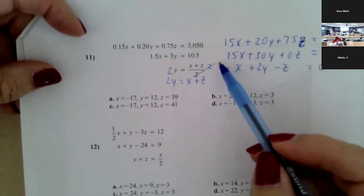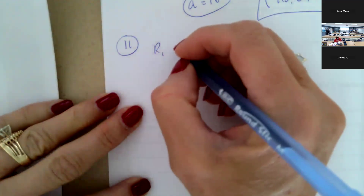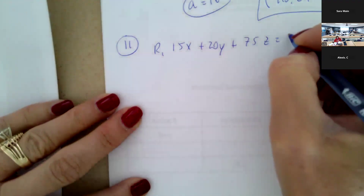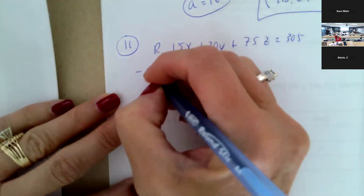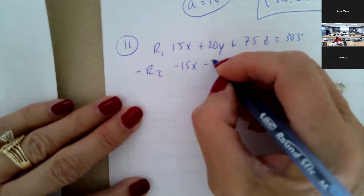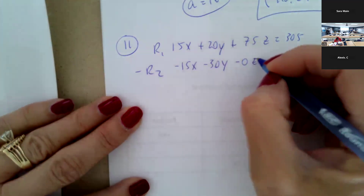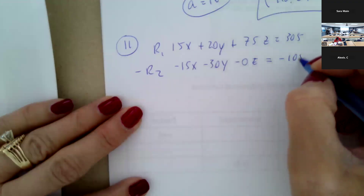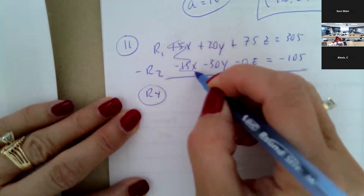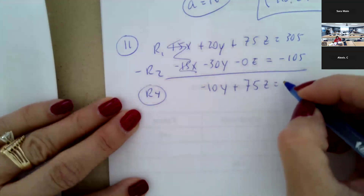The real work begins. I'm going to take the opposite of row two to cancel x, keeping row one as fifteen x plus twenty y plus seventy-five z equals 305. Taking the opposite of row two gives negative fifteen x minus thirty y minus zero z equals negative 105. Adding these to make row four: x eliminates, giving negative ten y plus seventy-five z equals 200.